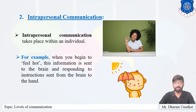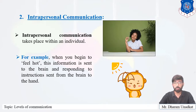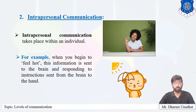The second level is intrapersonal communication, which takes place within an individual. The brain is linked to all parts of the body by an electrochemical system. For example, when you begin to feel hot, this information is sent to the brain and you may decide to turn on the cooler. The relevant organ is the sender, the electrochemical impulse is the message, and the brain is the receiver. The brain then assumes the role of sender and sends feedback to switch on the cooler, completing the communication process.